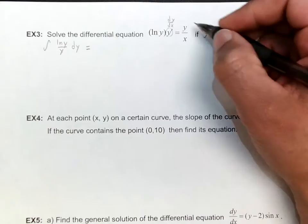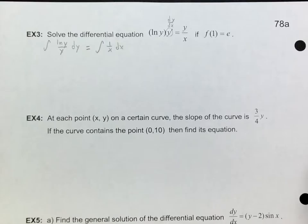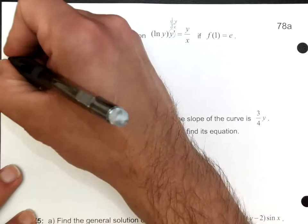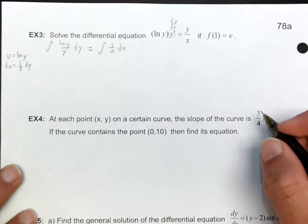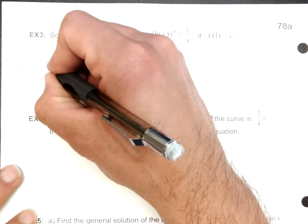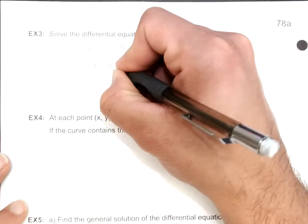On the right side I'm left with 1 over x, and multiplying both sides by dx gives 1 over x dx. Now I'm going to use u substitution. If u is the natural log of y, then du is 1 over y dy. So the natural log of y would just be u, and 1 over y dy would be du.